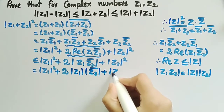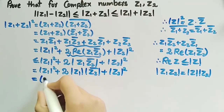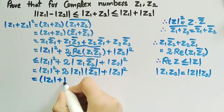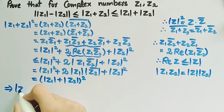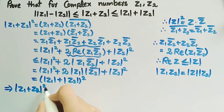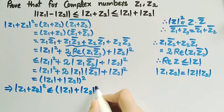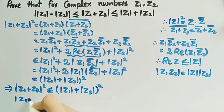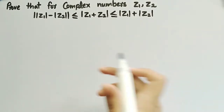This equals mod of z1 plus mod of z2, whole squared. So mod of z1 plus z2 squared is less than or equal to mod of z1 plus mod of z2 whole squared. Taking square root on both sides of the inequality, we get mod of z1 plus z2 is less than or equal to mod of z1 plus mod of z2. Let this be named as equation number one.